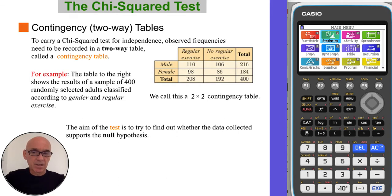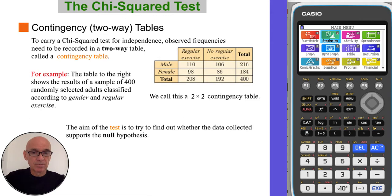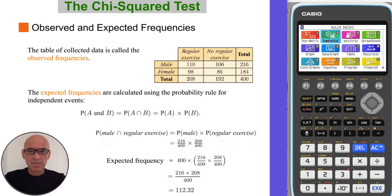To carry out a chi-squared test for independence, the observed frequencies need to be recorded in a two-way table called a contingency table. The example shown is a two-by-two contingency table because it has two rows for gender — male and female — and two columns: one for regular exercise and one for no regular exercise. The aim of the test is to find out whether the data collected will support the null hypothesis. The table of collected data is called the observed frequencies.